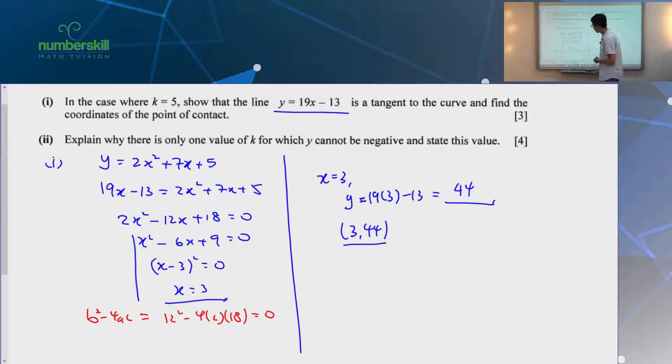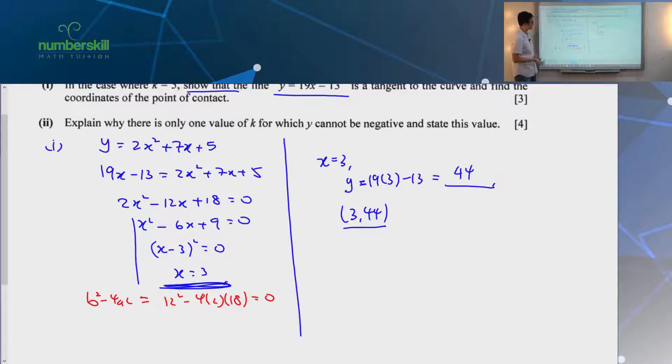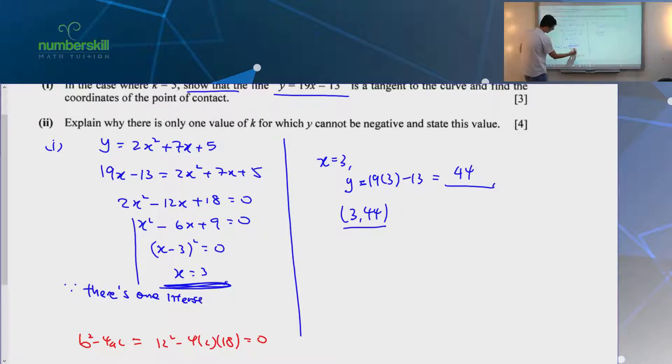Okay, the thing is this, right? Now, because you're supposed to show that it is a tangent. So just writing this down doesn't show effectively. You are just solving. You didn't explain why. So you have to write down a line. If you want to do the blue color part, you have to explain yourself. Well, since there is only one intersection, and then therefore, the line is a tangent.